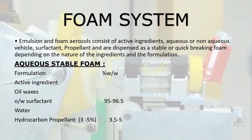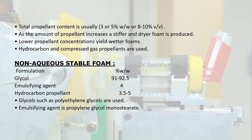Foam system: emulsion and foam aerosols consist of active ingredients, aqueous or non-aqueous vehicle, surfactant, and propellant, and are dispensed as a stable or quick-breaking foam. Aqueous stable foam formulation: active ingredient, oil, waxes, oil-over-water surfactant at 95–96.5%, and hydrocarbon propellant at 3.5–5%. Total propellant content is usually 3–5% w/w or 8–10% v/v. As the amount of propellant increases, stiffer and drier foam is produced; lower propellant concentrations yield wetter foams. Hydrocarbon and compressed gas propellants are used.